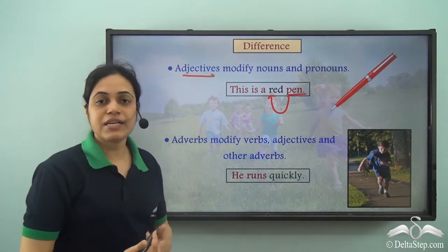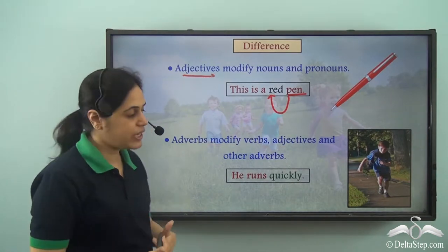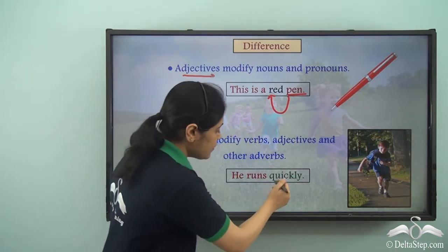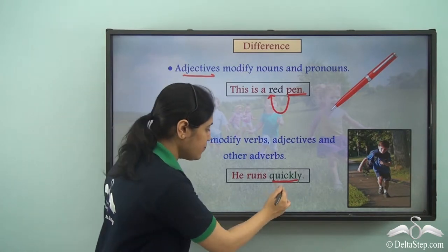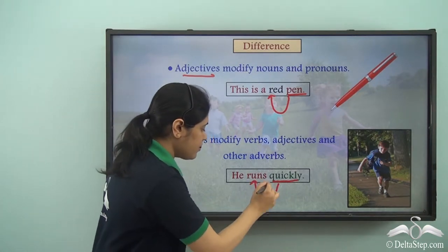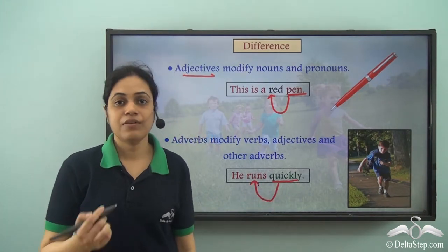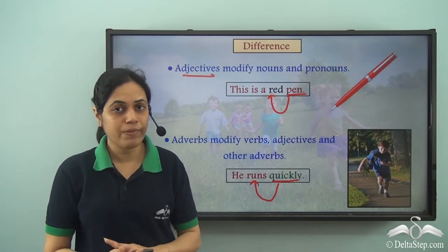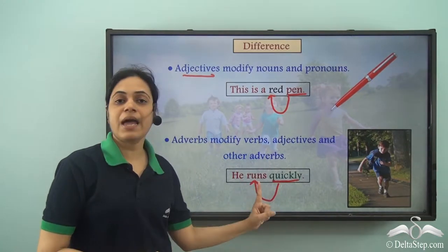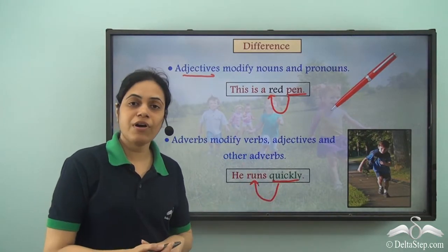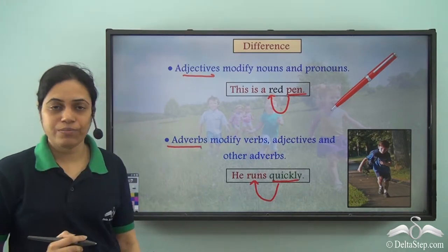Whereas in the sentence 'He runs quickly,' the word quickly is describing the word runs. Runs is a verb, so quickly is describing a verb — hence it is an adverb.